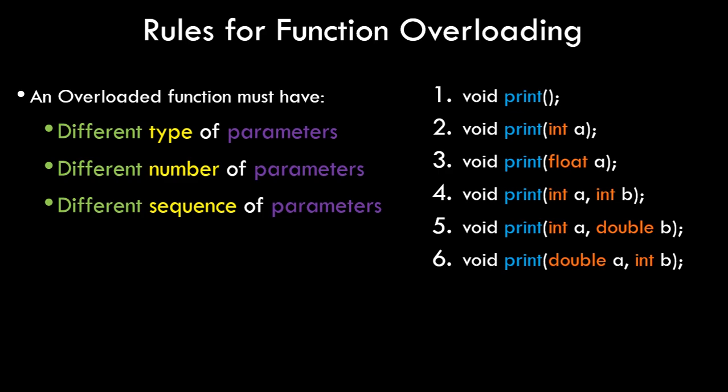For the third condition — different sequence of parameters — we look at examples five and six. In both cases two parameters are passed: one integer and one double. However, in case five the order is integer then double, while in case six it is double then integer. Swapping the order makes these valid overloaded functions.